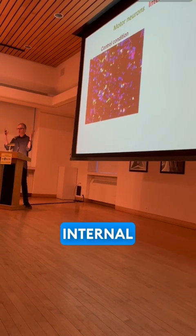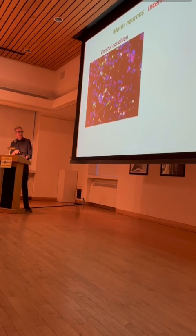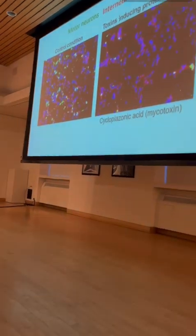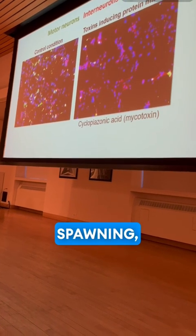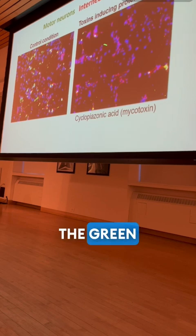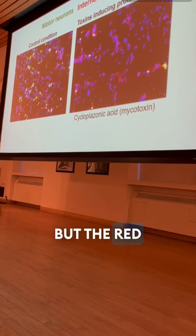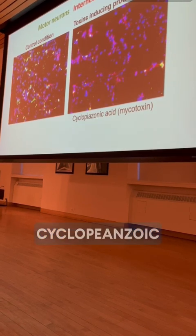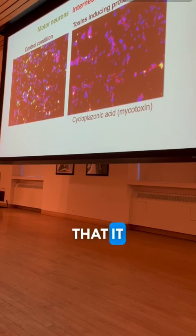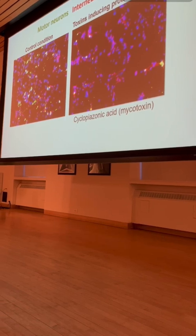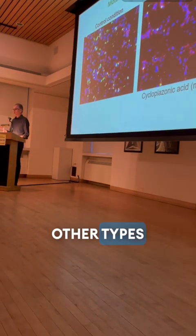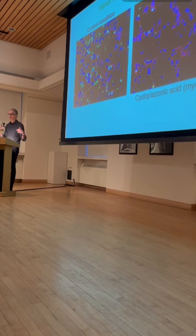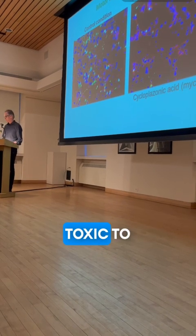These interneurons help communicate in neural circuits. Remarkably, when we exposed these cultures to a set of toxins, specifically toxins that induce protein misfolding, the motor neurons—the green cells—are basically disappearing from the cultures, but the red cells survive. We exposed them to a mycotoxin called cycloplasmic acid. It really highlighted that motor neurons are much more sensitive to induction of protein misfolding compared to other types of neurons. That could explain why some mutations that cause protein misfolding in genes expressed in all cells would be preferentially toxic to spinal motor neurons.